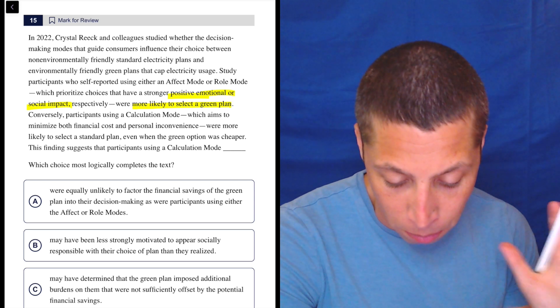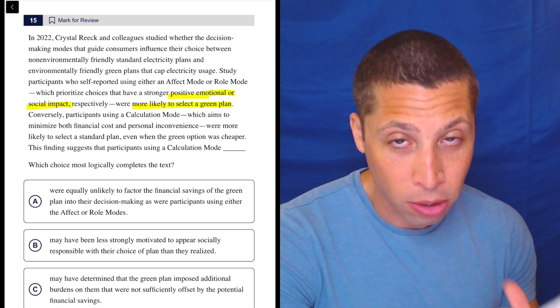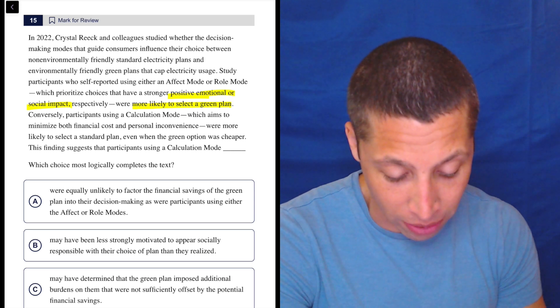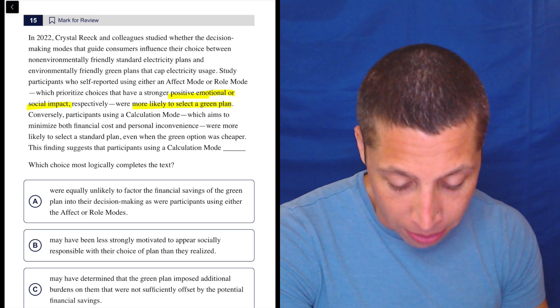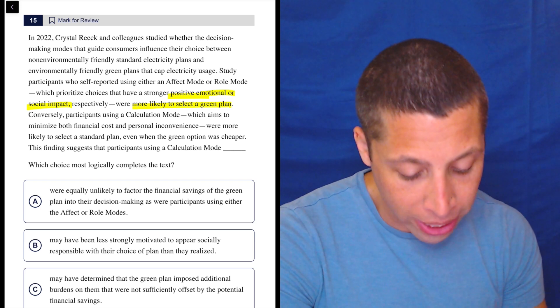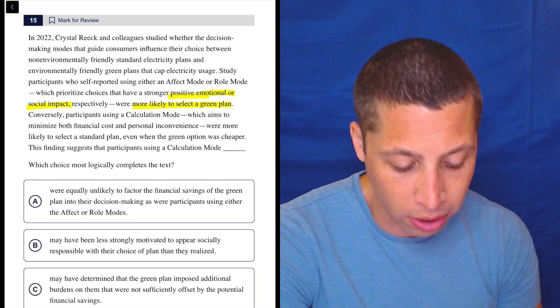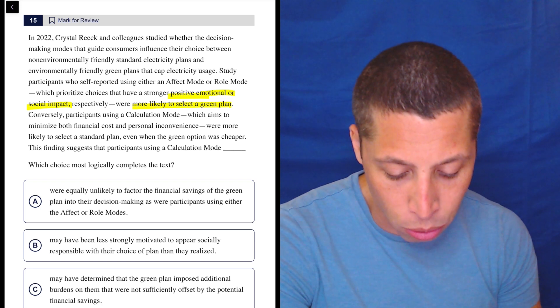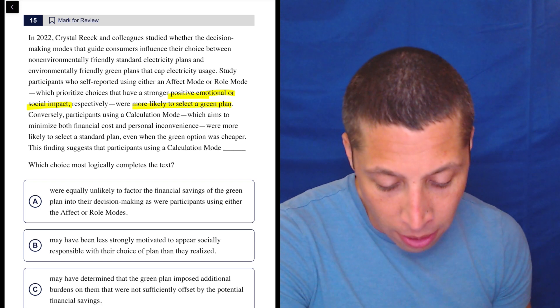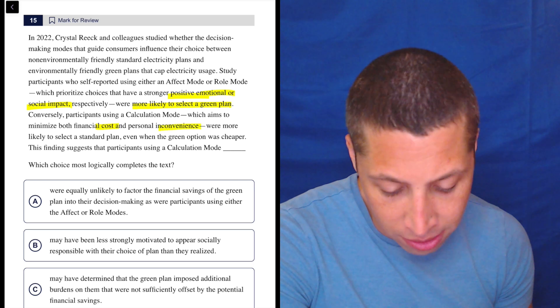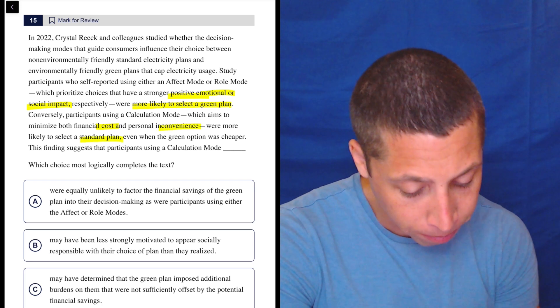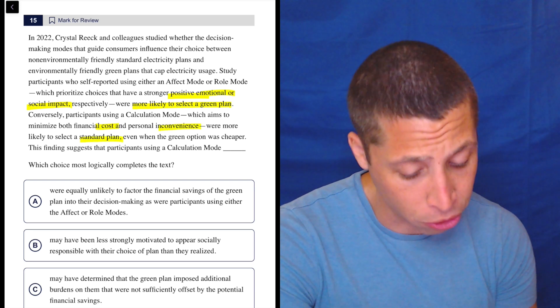Notice I'm not memorizing affect mode, role mode. Maybe that matters, but it's not going anywhere. Conversely, meaning oppositely, participants using a calculation mode, which aims to minimize both financial cost and personal inconvenience, were more likely to select a standard plan.